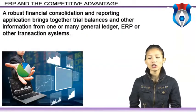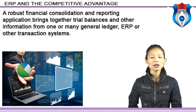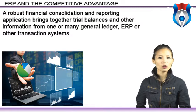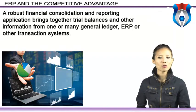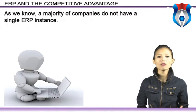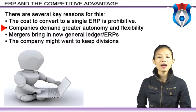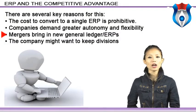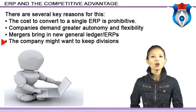A robust financial consolidation and reporting application brings together trial balances and other information from one or many general ledgers, ERP, or other transaction systems. Actual results from transactional general ledger or ERP systems will typically be loaded or integrated into the financial consolidation and reporting solution at the period end. Once the consolidation process is complete, reports and dashboards can be accessed through a web browser or Microsoft Office user interface. A majority of companies do not have a single ERP instance due to reasons such as the prohibitive cost of conversion, companies demanding greater autonomy in remote operations (two-tier ERP), mergers bringing in new ERP systems not immediately converted, or wanting to keep divisions separate for sell-off or public offering strategies.